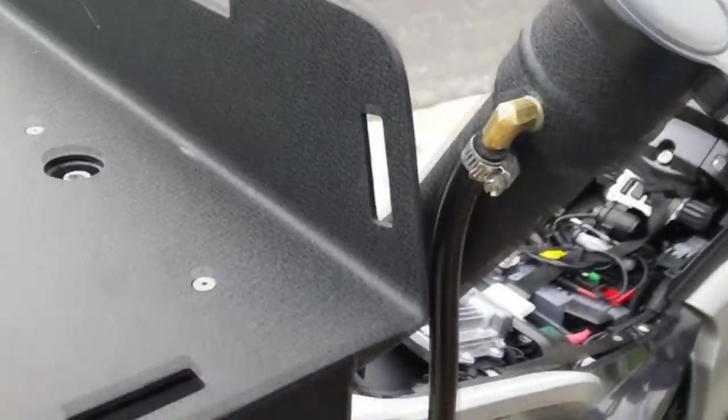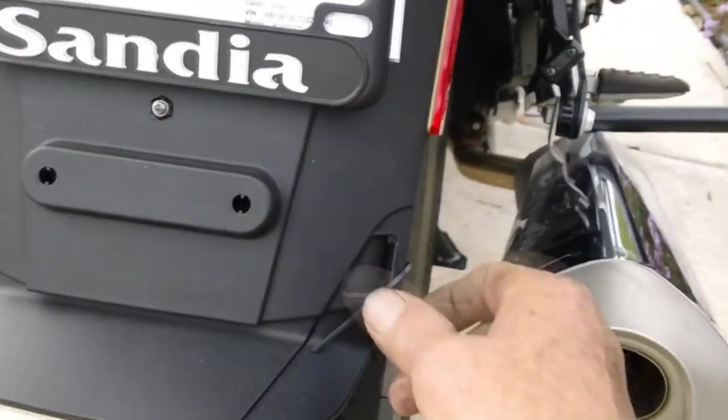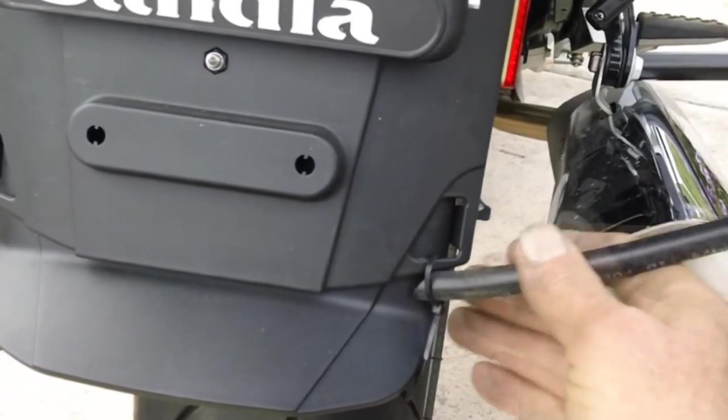The vent line is routed down alongside the right pannier. The rear splash guard on the K1600GTL has a nice location for a spot tie. We left it loose so the line could be removed without cutting the tie.